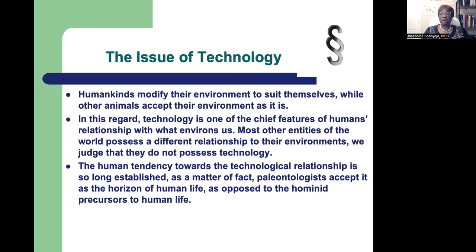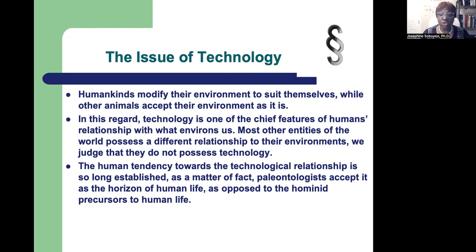Now let's talk about the issue of technology. Humankind modifies the environment to suit themselves, while other animals accept the environment as it is. Technology is one of the chief features of human relationships with the environment. Most other entities of the world possess a different relationship to their environments. When you go into the wilderness, you find lions and tigers in the natural environment — how they behave reveals that we have very different relationships to our environments.